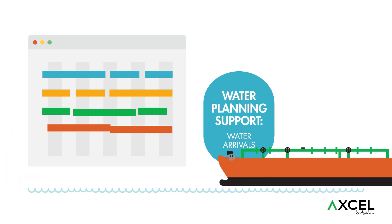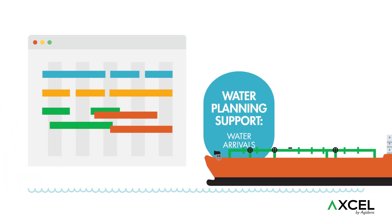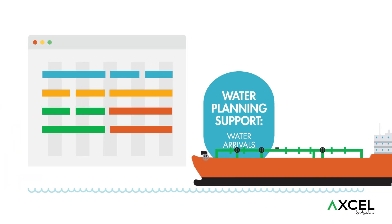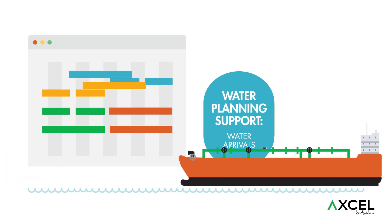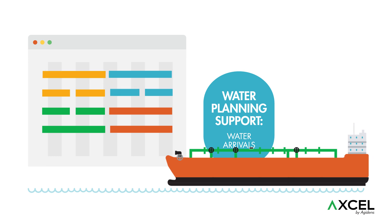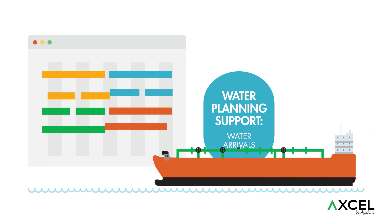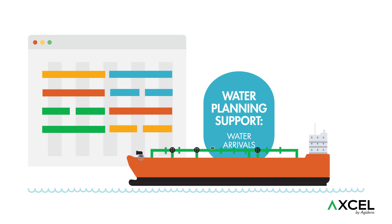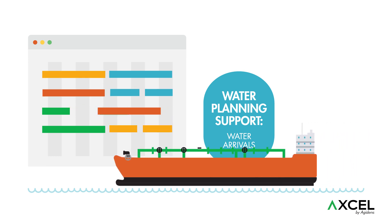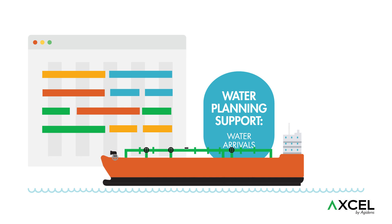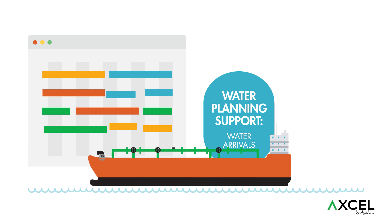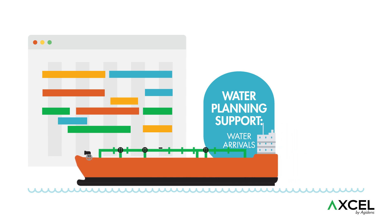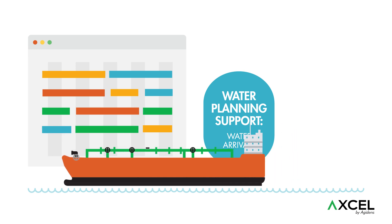The Water Planning Support module helps the planner in finding the optimal schedule and flow path for vessels and barges, avoiding possible contamination. It shows the impact on the configured KPIs while planning the incoming ships.